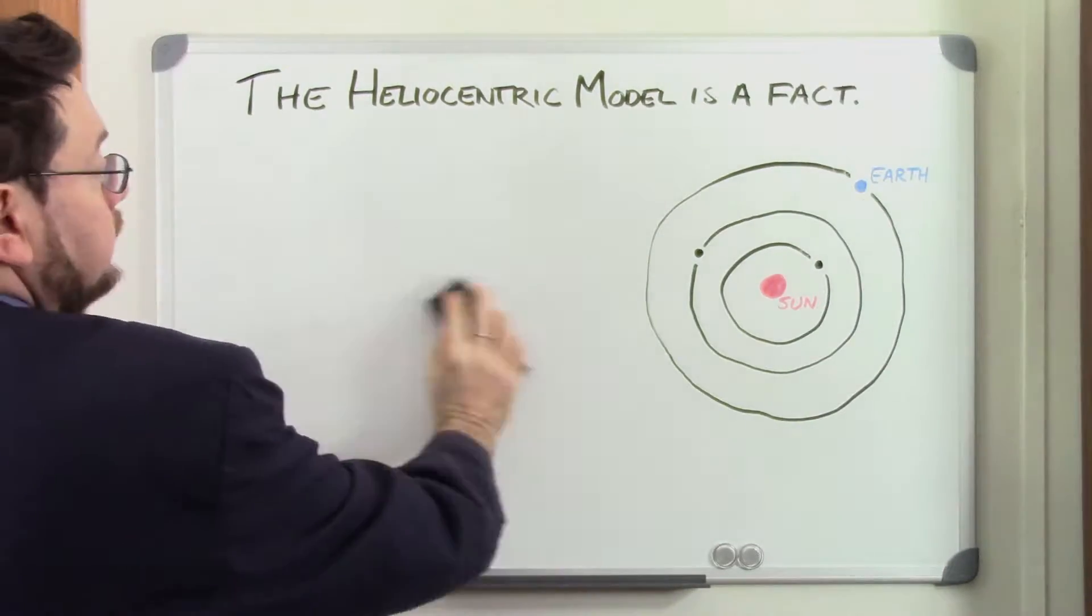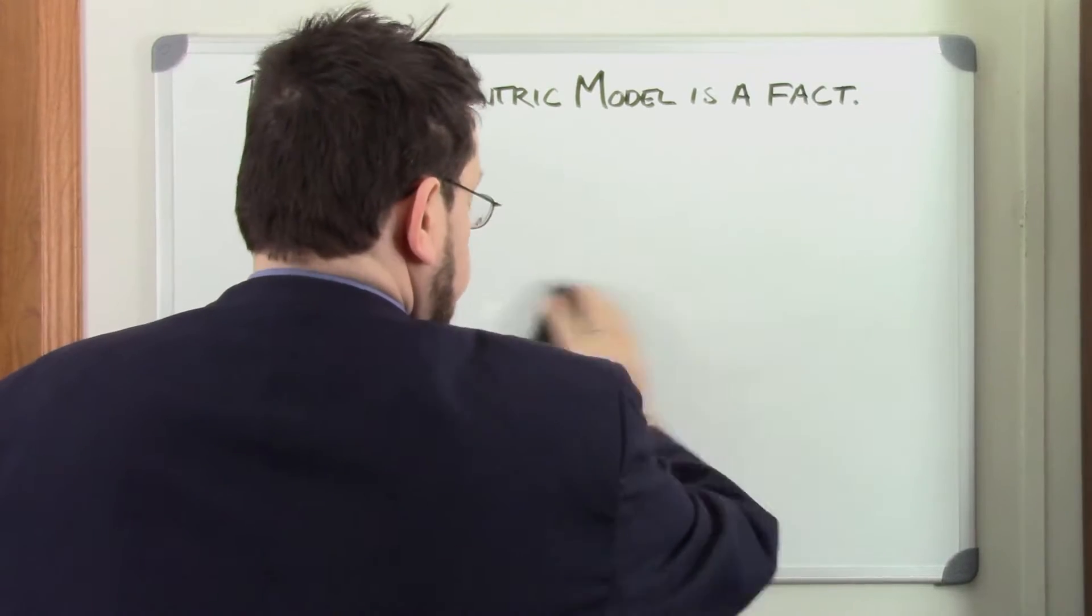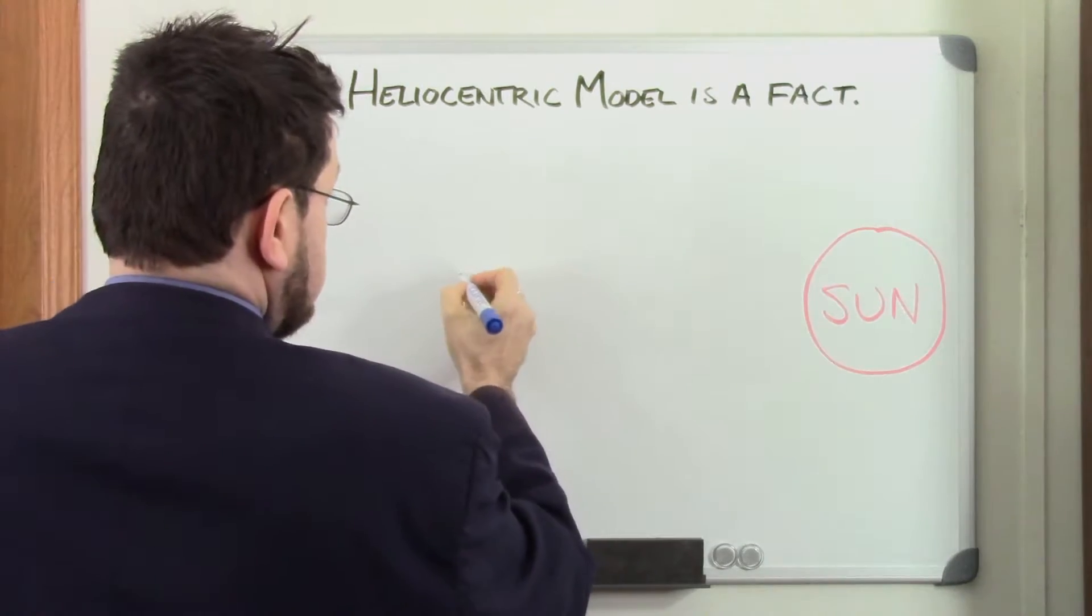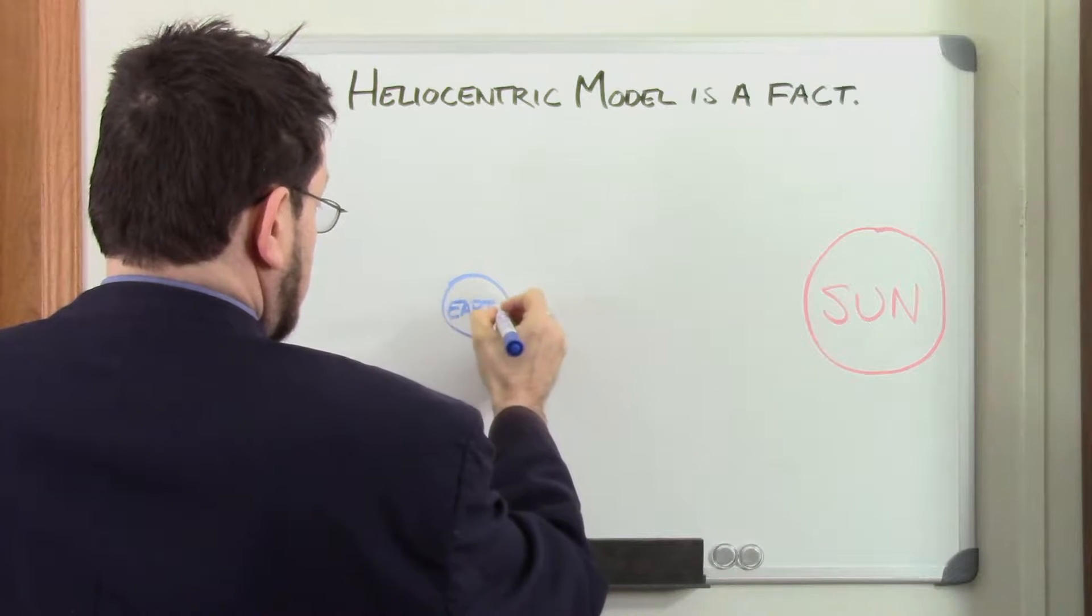Even in ancient times, people knew that the earth and moon were spherical. The ancient Greeks, for example, watched how the phases of the moon correlated with the angle in the sky between the sun and moon.